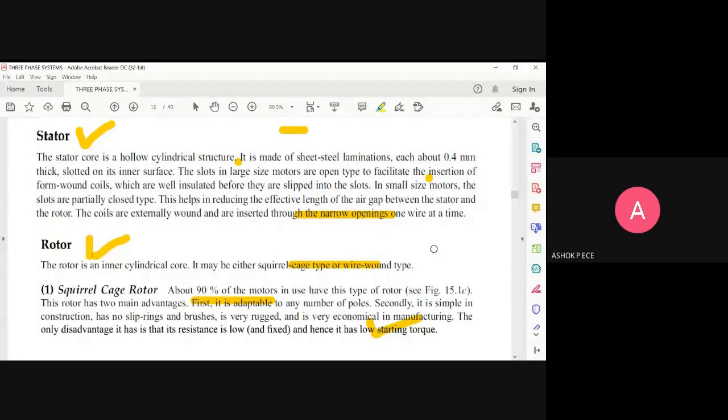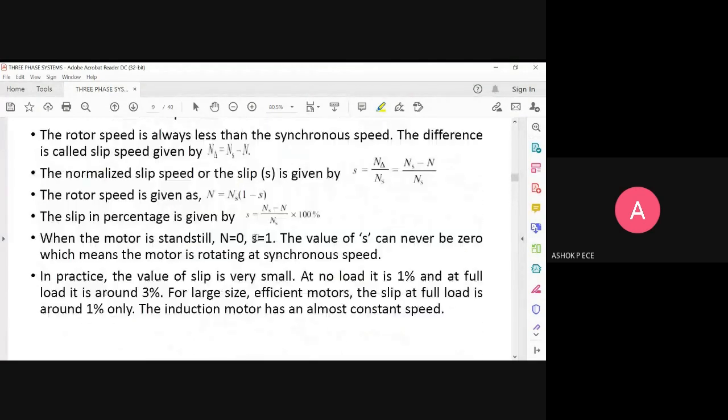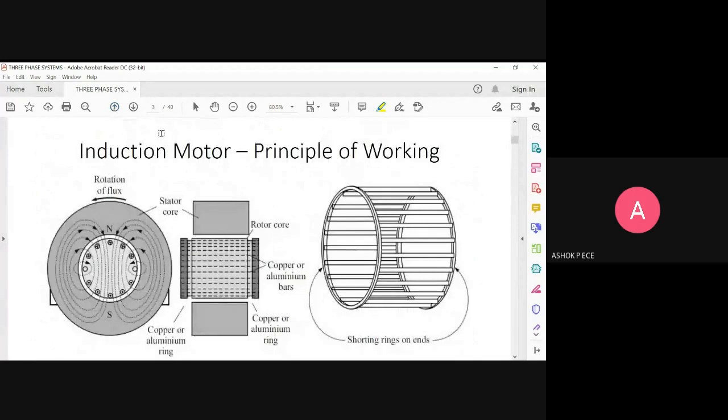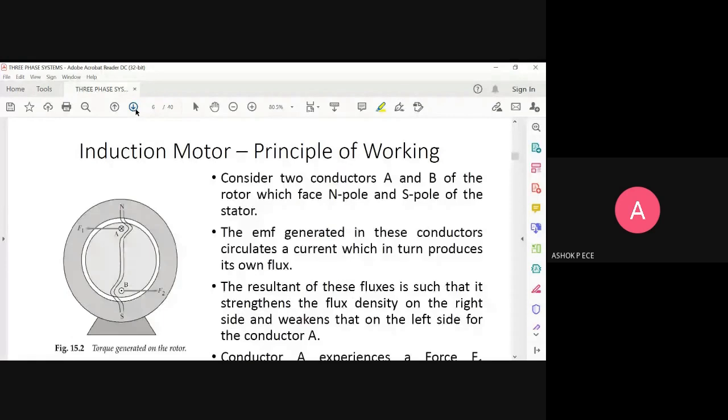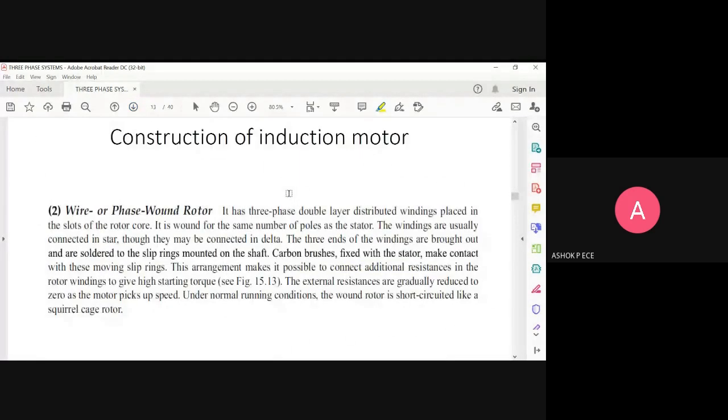The stator is very simple - a cylindrical structure with three phase winding. But the rotor has two structures. One is squirrel cage rotor, which we have seen in the construction. This is the squirrel cage rotor.